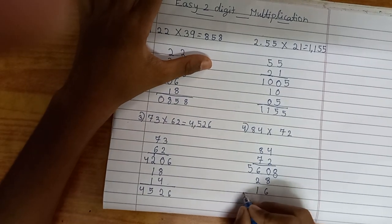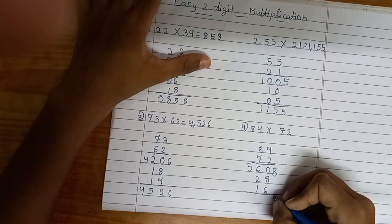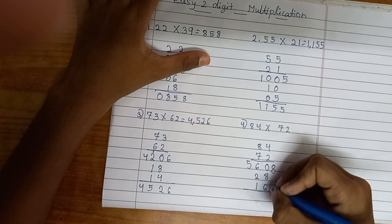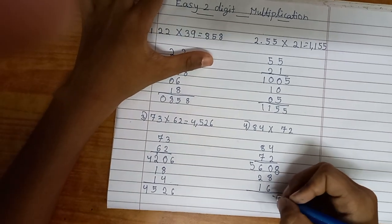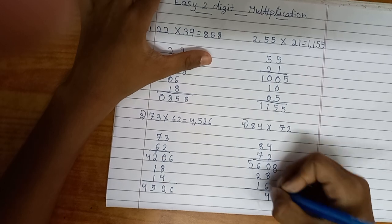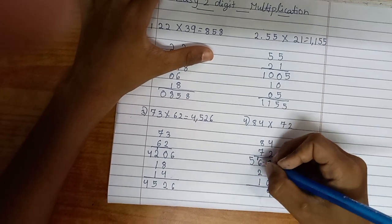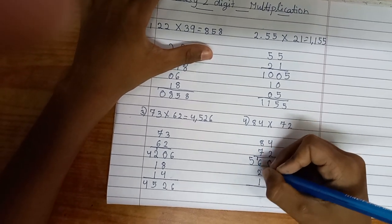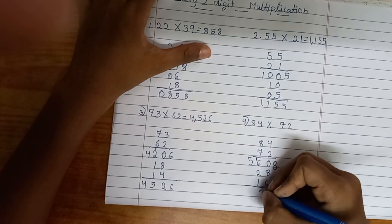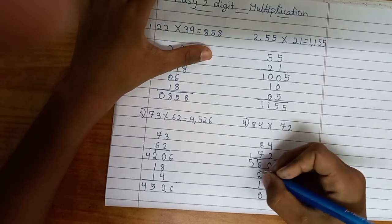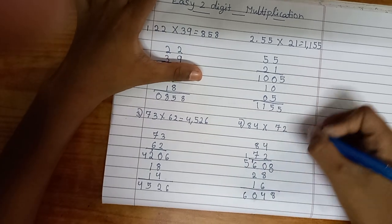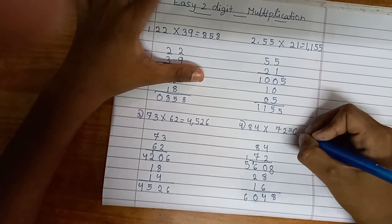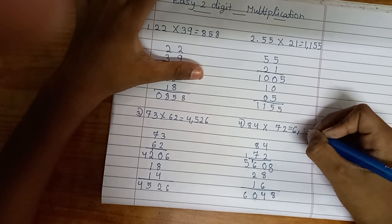Now I'll add them all: 8, 8 plus 6 is 14, so 4. 1 plus 2 is 3, plus 6 is 9, plus 1 is 10. So 0, 1 plus 5 is 6. The answer is 6048.